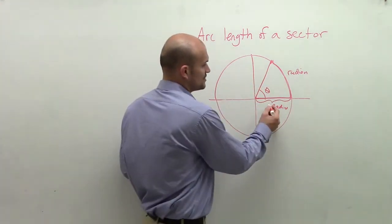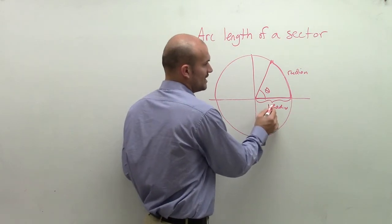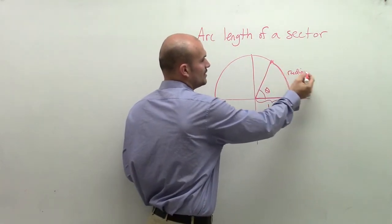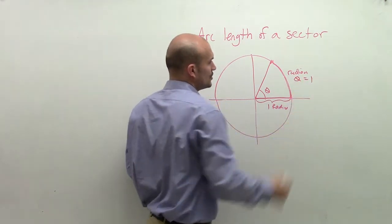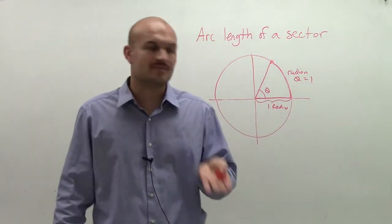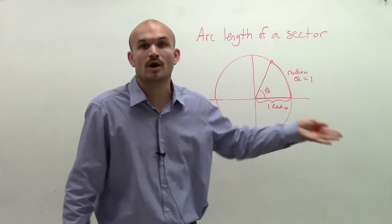Now since the radius was one radius, and when I measure it one radian, we said theta was equal to 1. That means the measure of theta was equal to 1 radian.